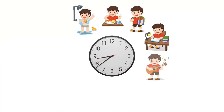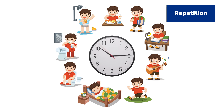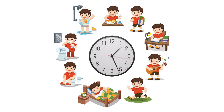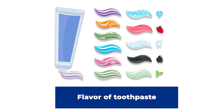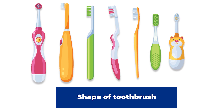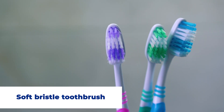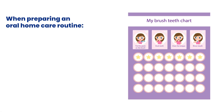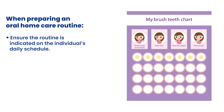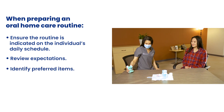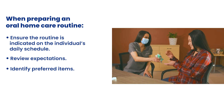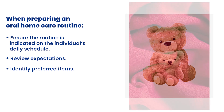Creating a reliable oral home care routine is helpful for everyone and can be especially important in the case of ASD. Consider scheduling morning and evening oral home care routines at the same time each day, and develop a step-by-step plan that can be easily repeated. If sensory concerns are identified, different flavored toothpaste can be attempted, as well as differently shaped or colored toothbrushes. Soft bristle brushes are recommended. When preparing the routine, ensure it is indicated on the individual's daily schedule, review behavioral expectations, and identify preferred items such as a stress ball, stuffed animal, or blanket, determined by interview, observation, or trial.